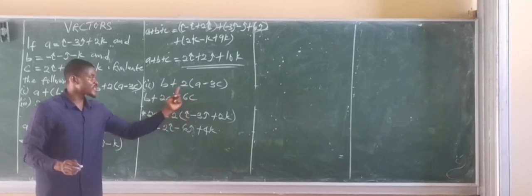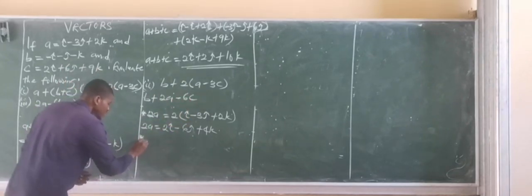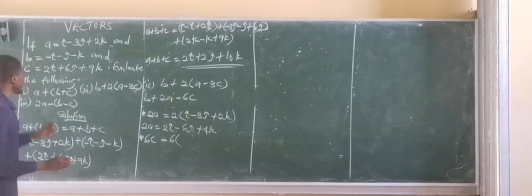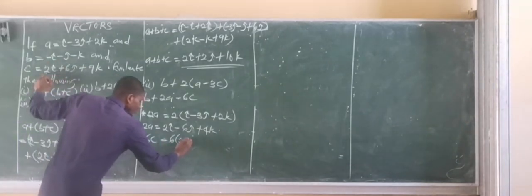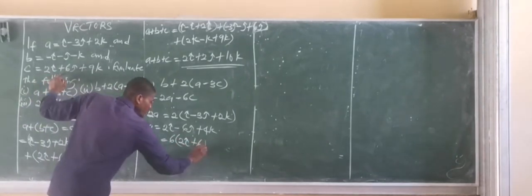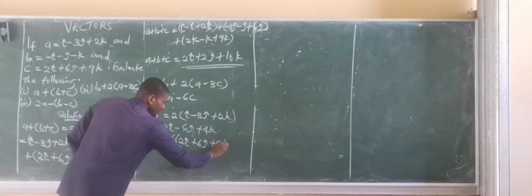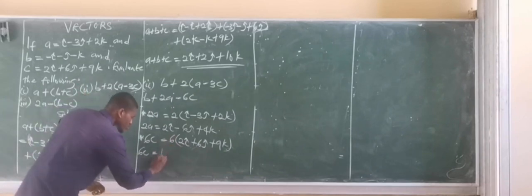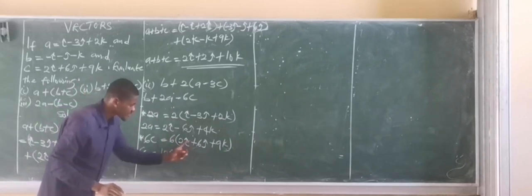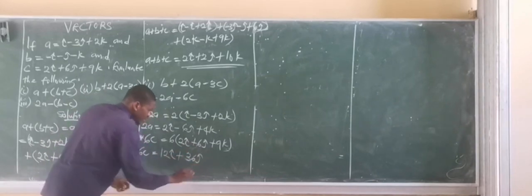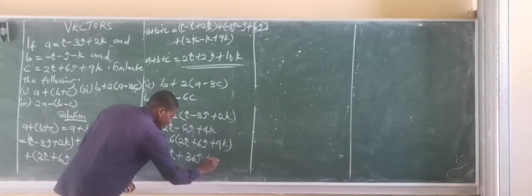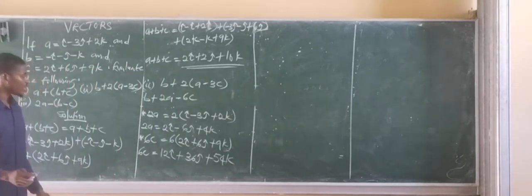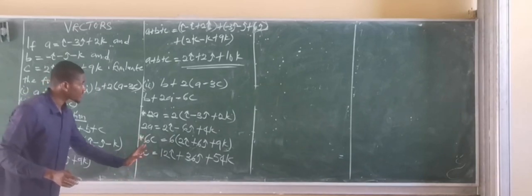The next thing we will do is evaluate 6C. 6C is now equal to 6 multiplied by the value of vector C, and vector C gives us 2I plus 6J plus 9K. So 6C is now equal to: 6 times 2I gives us 12I, 6 times 6J gives us plus 36J, and then 6 times 9 gives us 54K. So that's the value for 6C.